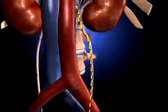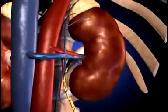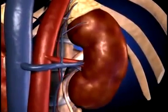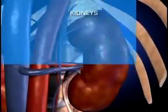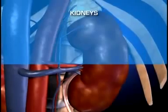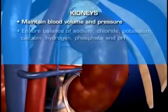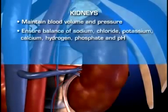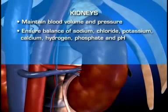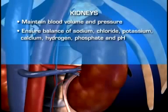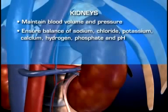The kidneys also selectively reabsorb those substances that are needed to maintain the normal composition of the blood. By adjusting blood composition, the kidneys are able to maintain blood volume and pressure, and ensure the proper balance of sodium, chloride, potassium, calcium, hydrogen, phosphate, and pH.